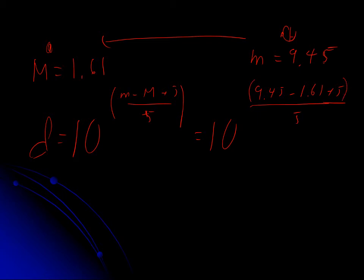If you enter this into your calculator, make sure you enter it correctly. 9.45 minus 1.61 plus 5, all of that divided by 5. This is going to be 10^2.568.